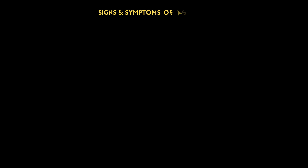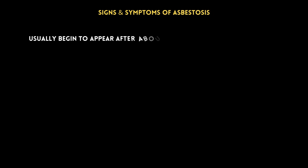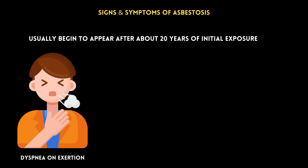The symptoms of asbestosis usually begin to appear after about 20 years of initial exposure. However, some individuals may experience symptoms sooner if the exposure is high. Dyspnea on exertion is the most common symptom of asbestosis, and it becomes more severe as the disease progresses.